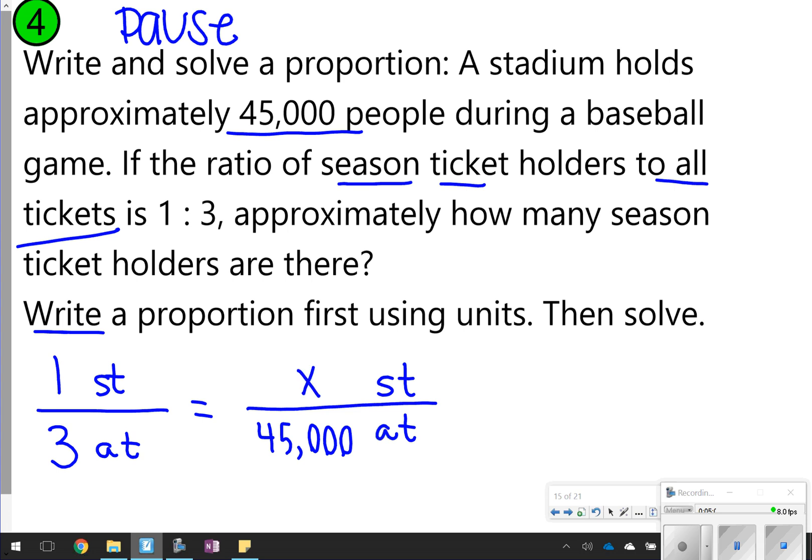Don't know how many season ticket holders are there. But notice that one-third is being used. So you basically are finding a third of 45,000, which means about 15,000 people are season tickets.